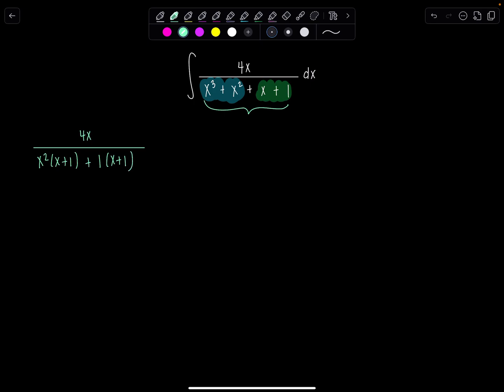And then now you can see both x plus ones appear in the denominator. So if I factor that out, then I have x plus one times x squared plus one.